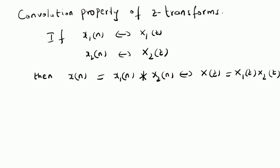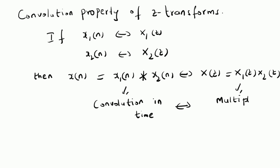Basically, the property says that convolution in the time domain is equivalent to multiplication in the Z domain. That is, convolution in time is equivalent to multiplication — we simply multiply the Z transforms in the Z domain.